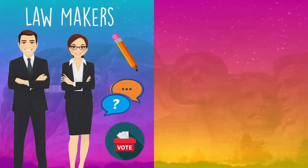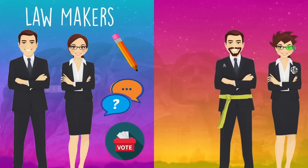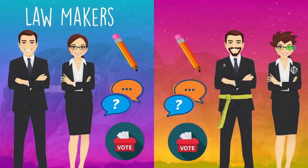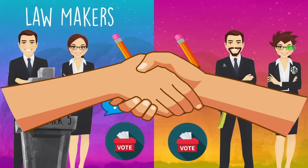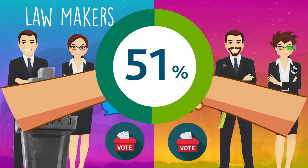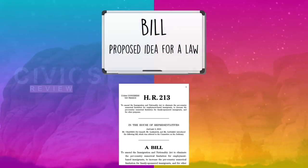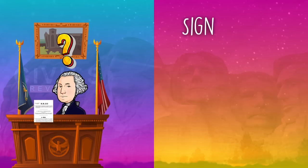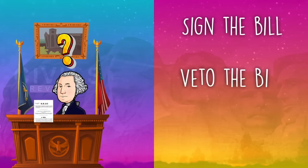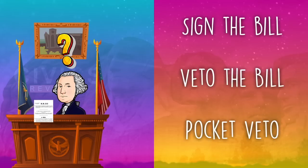If one chamber of the legislative branch does manage to pass the bill and vote on it, it goes to the other chamber to repeat the same process of editing, debating, and voting — and it's most likely going to die. But if they can both agree on the bill, and that number is a simple majority vote of 51%, then they're ready to move on. The bill will find its way onto the president's desk, where he can sign the bill and it becomes a law, veto the bill so it goes back to Congress, or pocket veto the bill and hope that Congress disbands while it's still in his pocket.